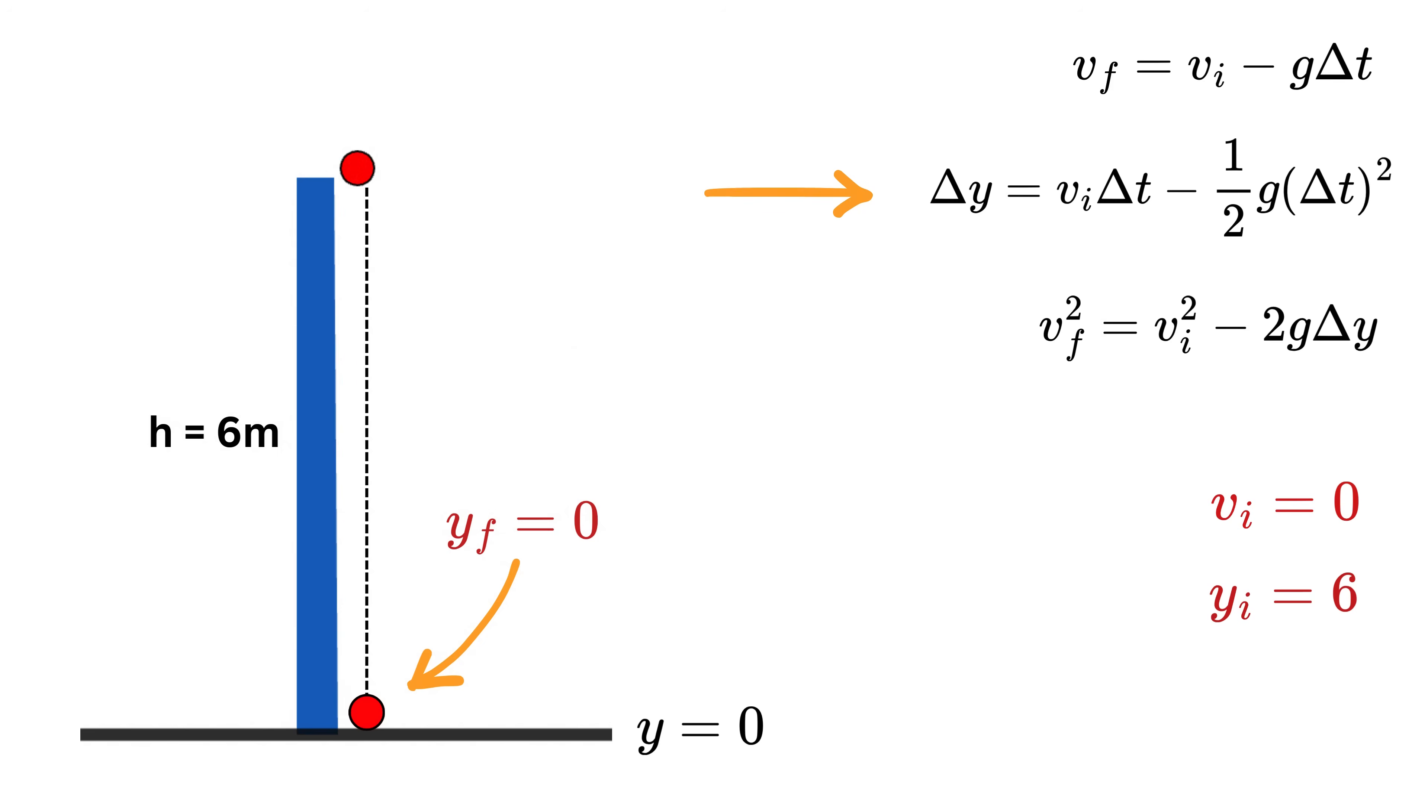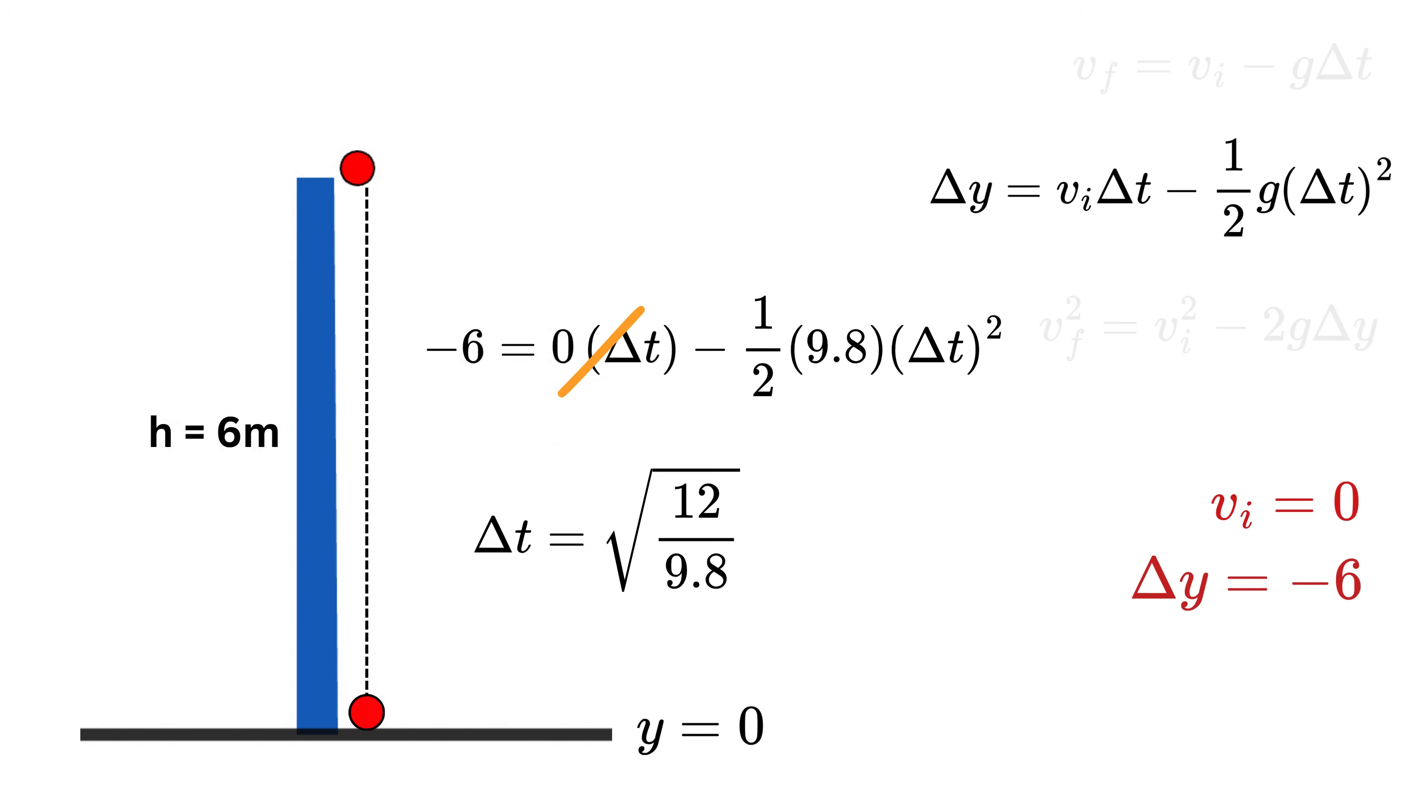Now the final position y_f of the ball is at y equals zero and y_i is six, so we get Δy as minus six. This negative sign makes sense because the displacement is in a downward direction. Now substitute all known values to solve for Δt. We get minus six equals zero times Δt minus half of minus g times Δt squared. Put this g as 9.8, so Δt will be equal to the square root of 12 over 9.8, which is roughly 1.1 seconds. So the ball takes about 1.1 seconds to fall six meters.